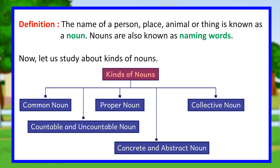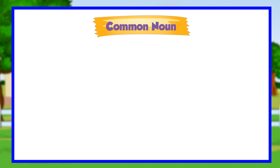Kinds of nouns: Common noun, Proper noun, Collective noun, Countable and uncountable noun, Concrete and abstract noun.